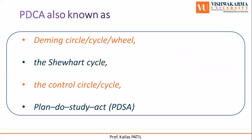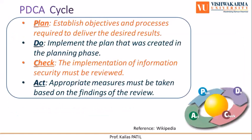This approach is known as the PDCA cycle, according to which there are four steps for appropriate implementation of information security: Plan, Do, Check, and Act. Plan means to establish objectives and processes required to deliver the desired results. The approach for implementing information security must be planned effectively.